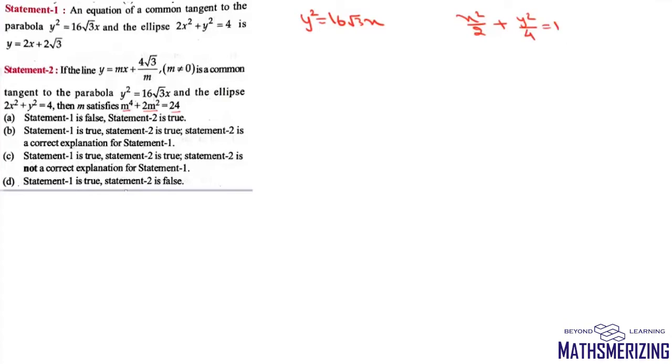Now for this parabola we write the equation of tangent. The equation of tangent for this parabola is y = mx + a/m. What is the value of a? Since 4a = 16√3, a = 4√3. So y = mx + 4√3/m which is given in statement 2.